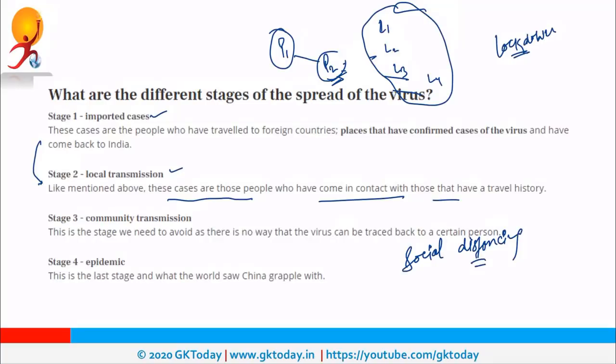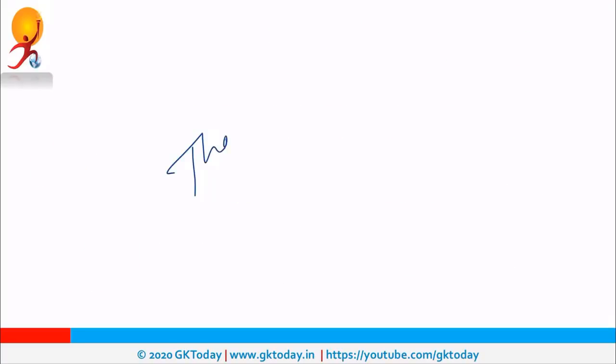The last stage is epidemic, where almost every other person is infected in that particular area. So these were the important points on the stages of coronavirus transmission.